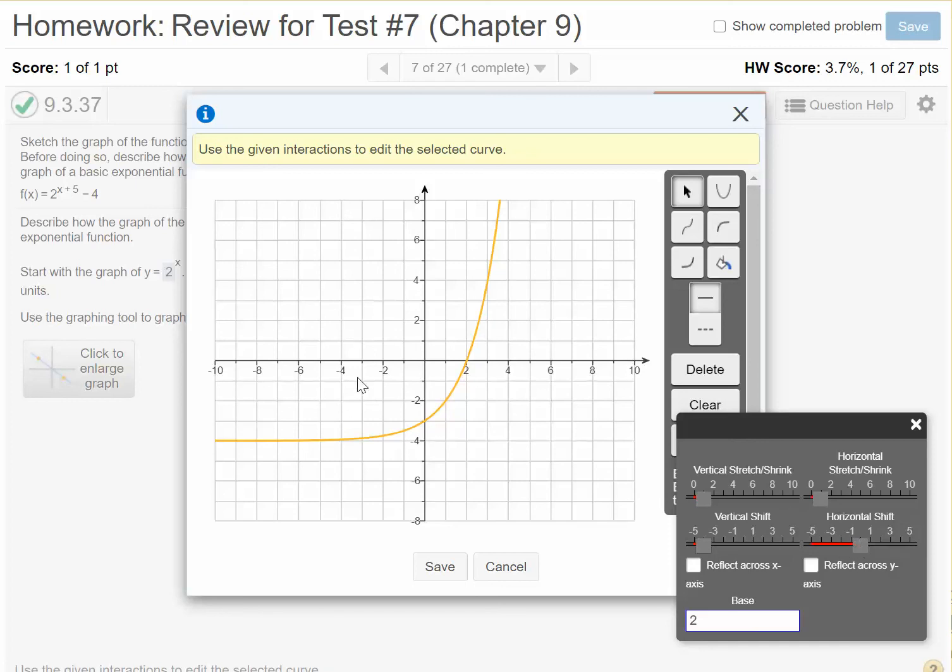And then the horizontal shift, remember, that's the one that's left 5. So I think we're going to want to go over here. And you can see the graph moving to the left, which is what we would expect. And you can also see, as I do this, it says negative 5. So you know you're in the right position.